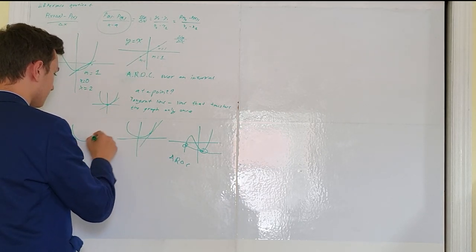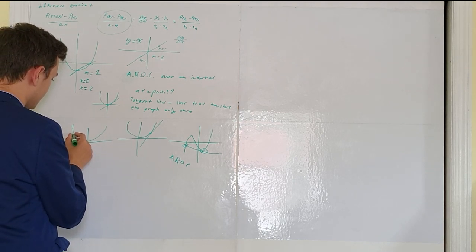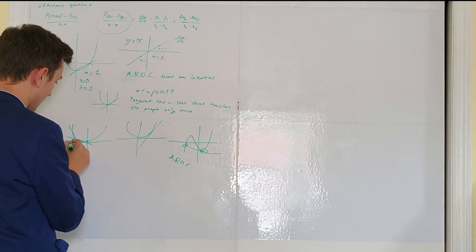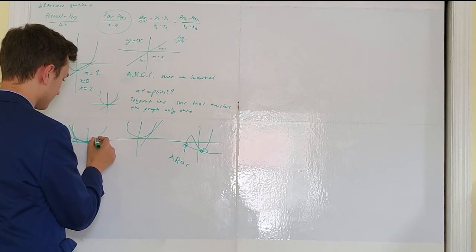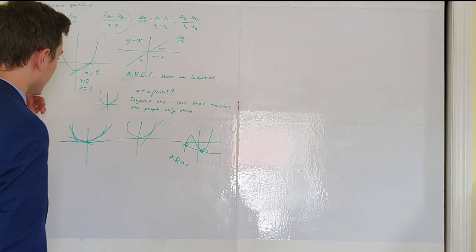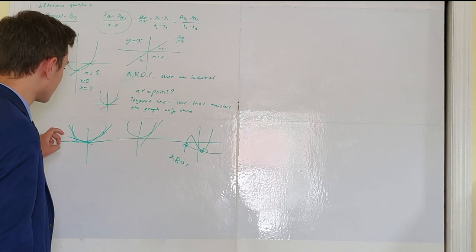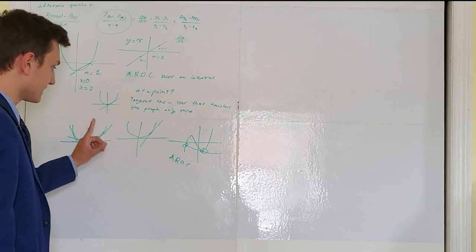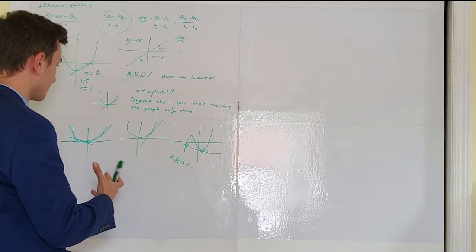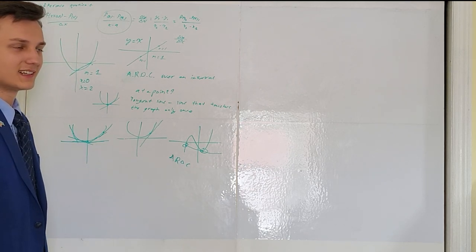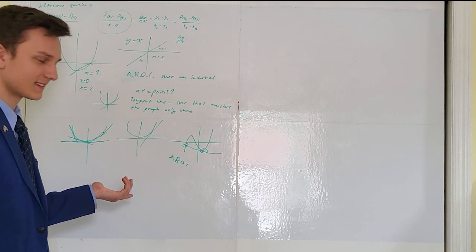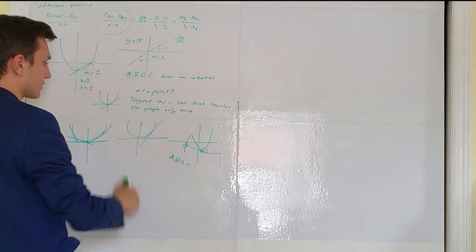If we follow the tangent line throughout the course of the graph, at different points the tangent line has different orientations. What I'm demonstrating here is that the tangent line represents the slope of the parabola at a singular point. Because the parabola is a curve, it can't have one slope — the slope is constantly changing. But even so, it must have a single slope at each single point. That is what the difference quotient aims to achieve.